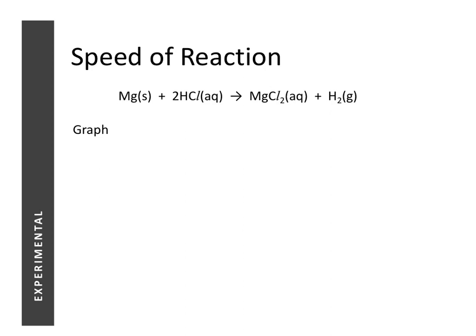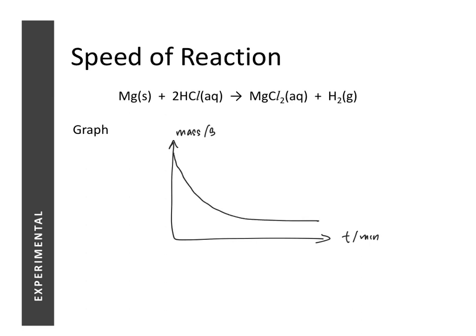With this setup, we can plot a graph of mass versus time. The same rules apply, but since we are looking at the change in reactants per unit time and reactants are getting lesser, the gradient is now negative. At the start of the reaction the gradient is the steepest, so the speed of reaction is highest. It decreases as the reaction proceeds before reaching zero, which means the reaction has stopped at that point.